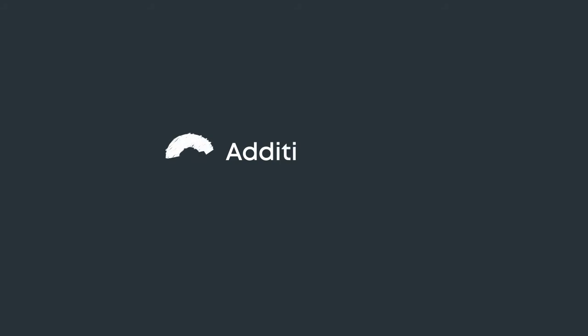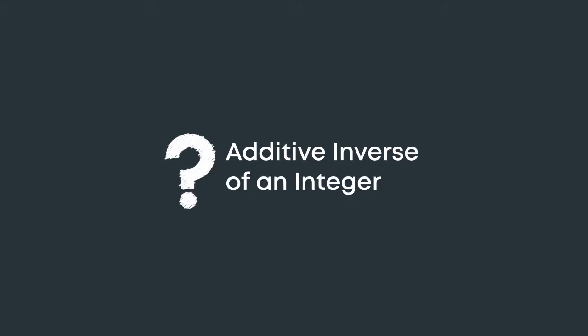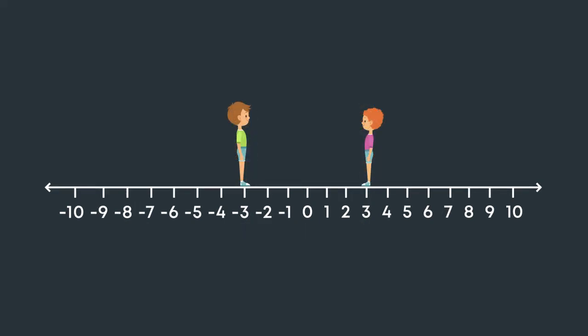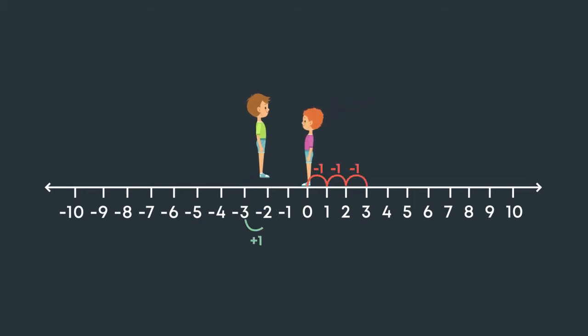In this video, let us understand what is the additive inverse of an integer. Abhay is standing three feet to the right of zero and Rahul is standing three feet to the left of zero on a horizontal number line. Rahul and Abhay are standing at equal distances from zero but in opposite directions.